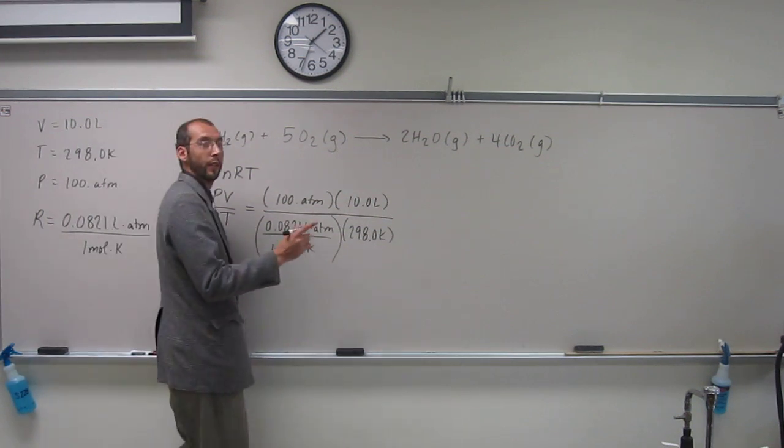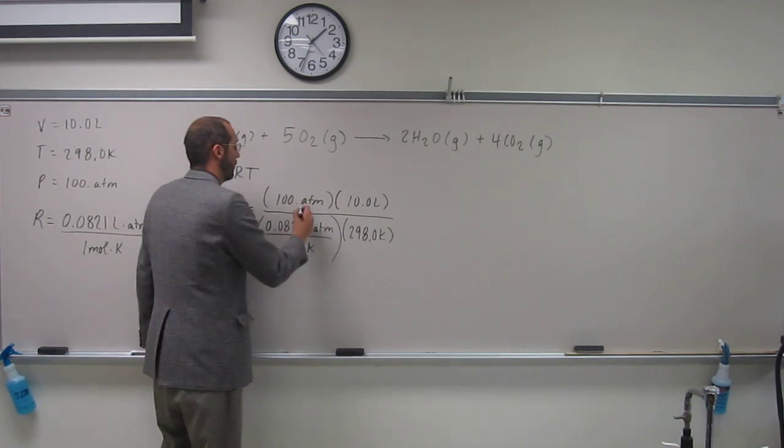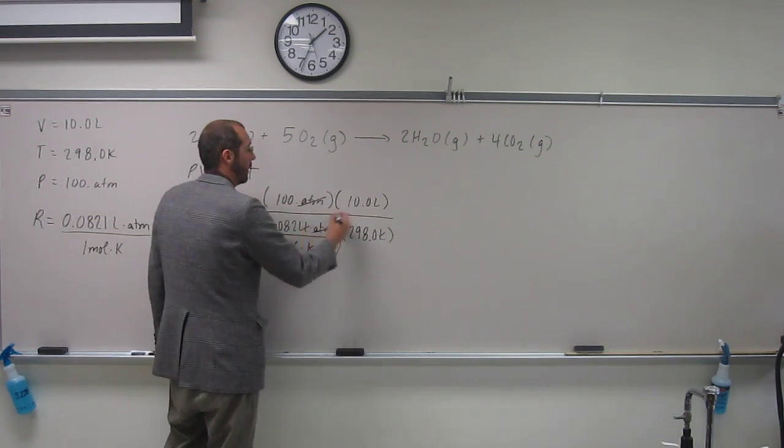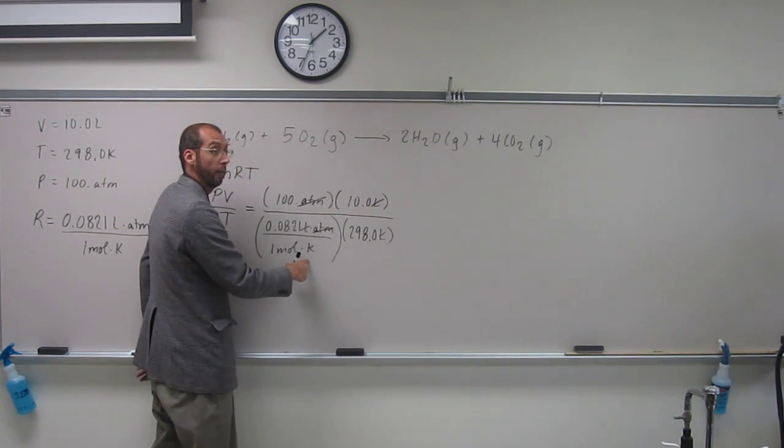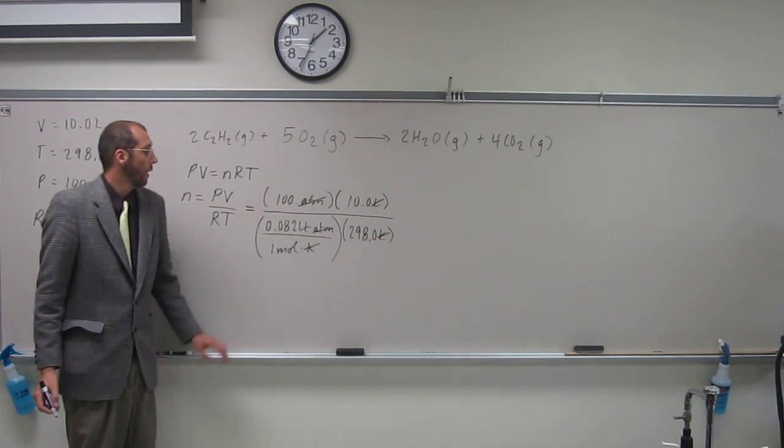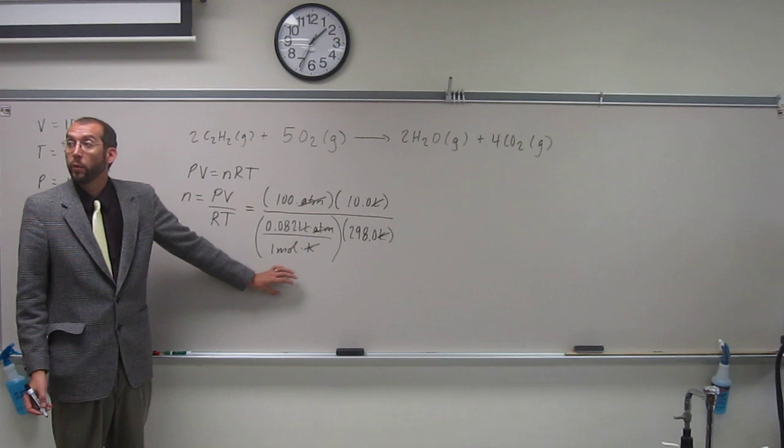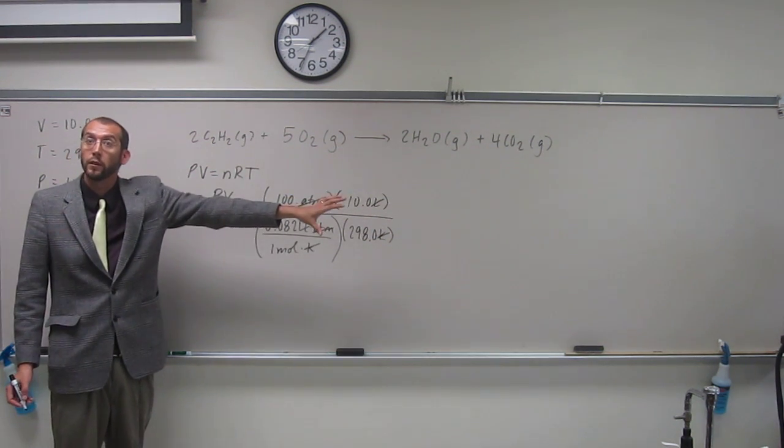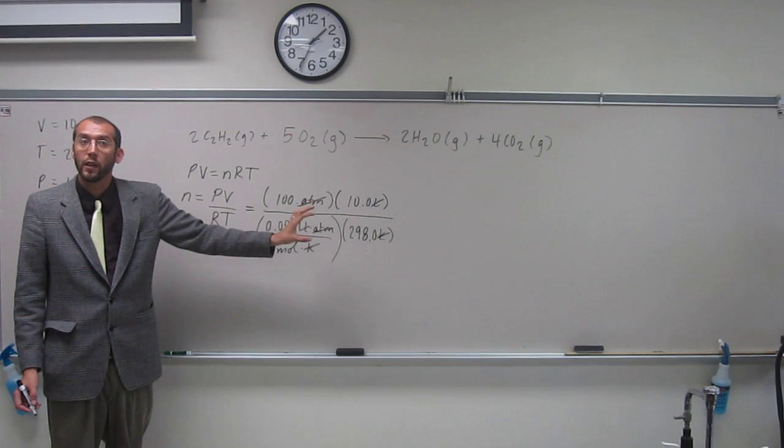Now let's cancel out our units. Atm cancels with atm. Liters cancels with liters. Kelvin's on the bottom, so it cancels with Kelvin there. One divided by puts it up to the top, so moles is our new unit. Is everybody okay with that kind of assessment?